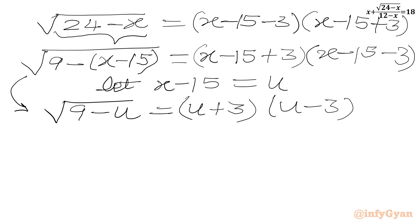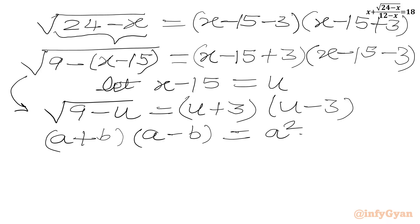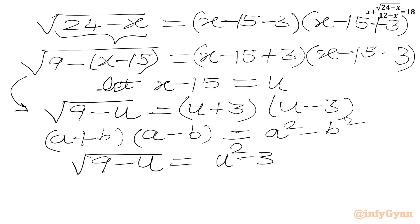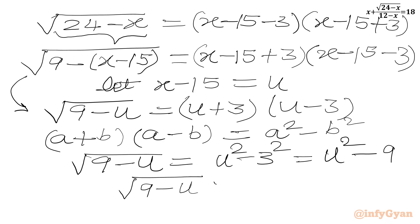We know the difference of two squares identity: (a plus b)(a minus b) = a squared minus b squared. Applying this to the RHS, (u plus 3)(u minus 3) = u squared minus 9. So our equation becomes: square root(9 minus u) = u squared minus 9.